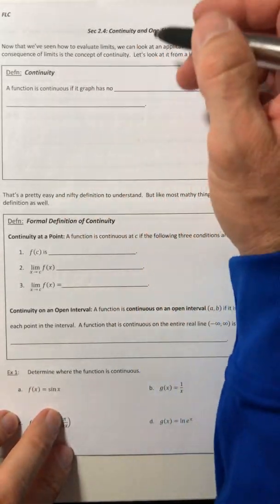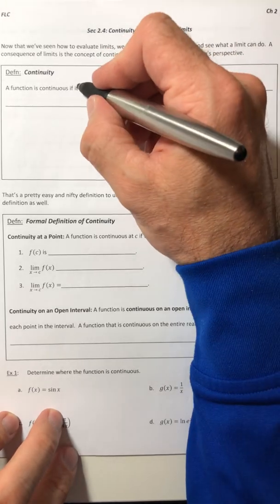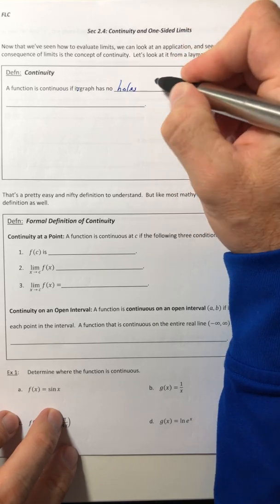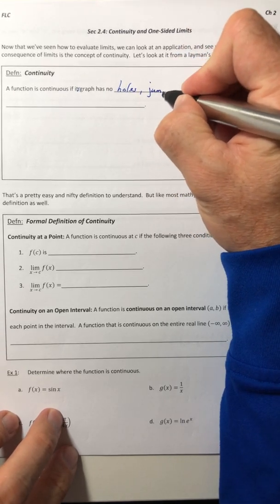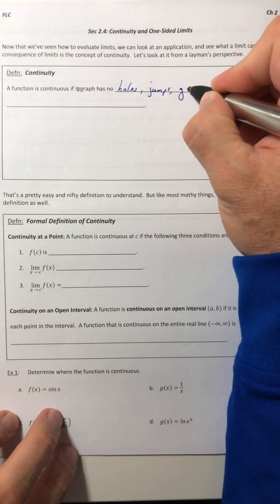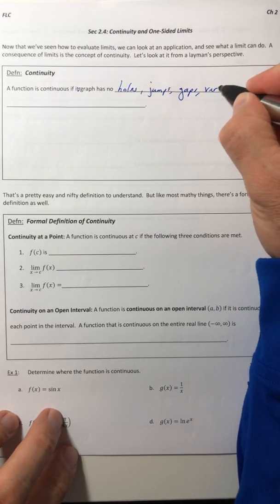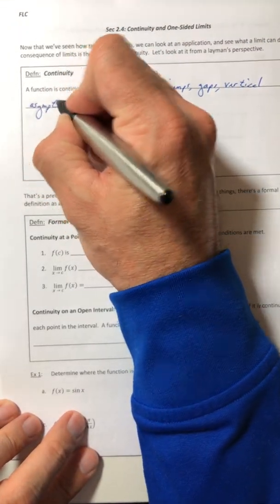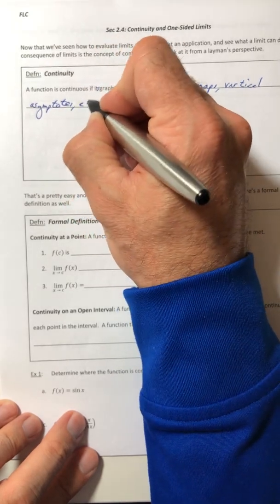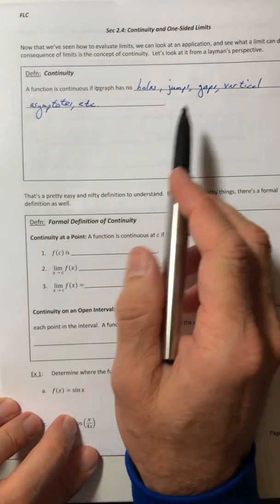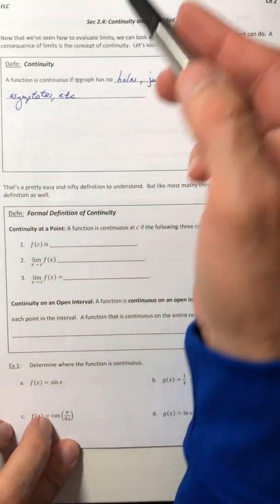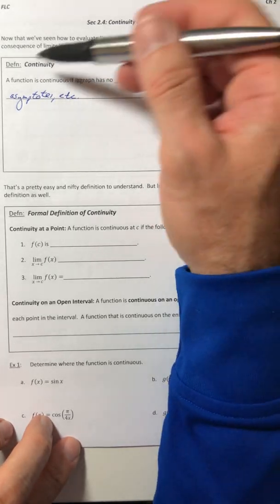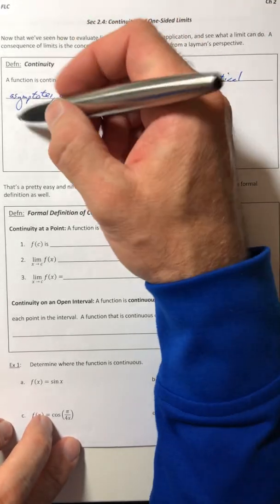A function is continuous if its graph has no holes, jumps, gaps, vertical asymptotes, etc. You don't want anything that's going to break the graph into two or more pieces. Another way you could look at this is you can draw the whole thing without lifting your pencil.